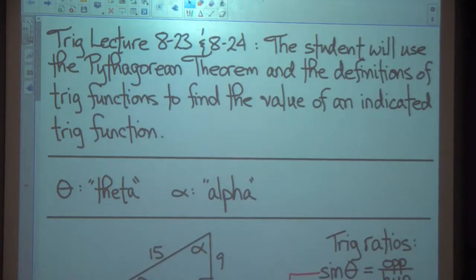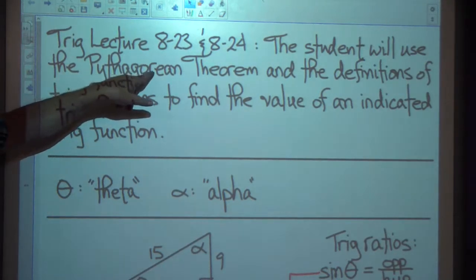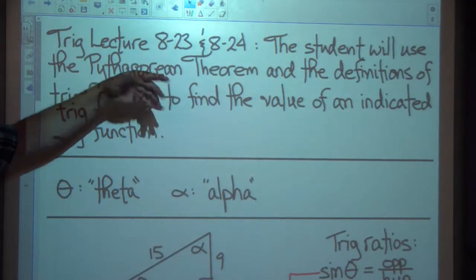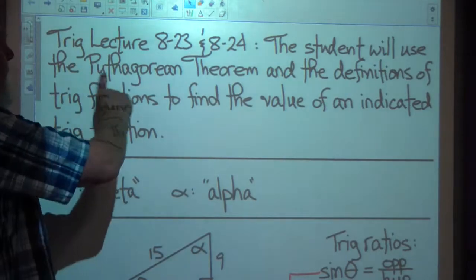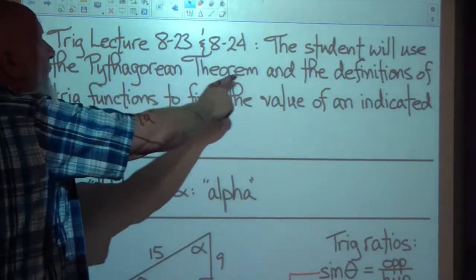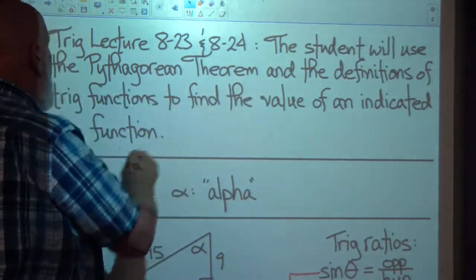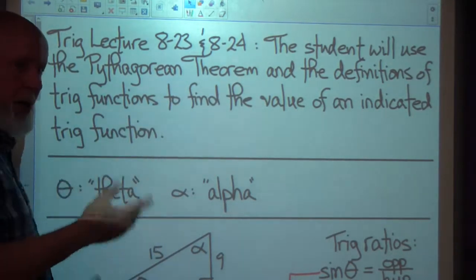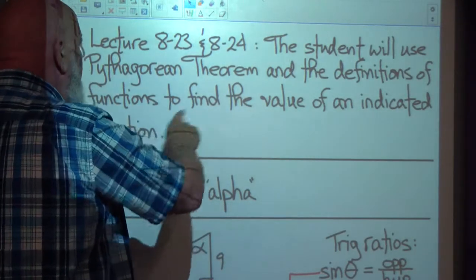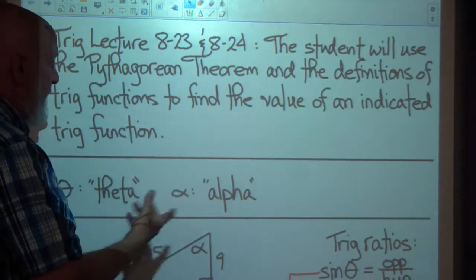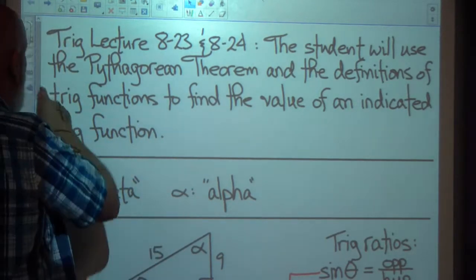This is trig lecture 823 and 824. The student will use the Pythagorean theorem — a squared plus b squared equals c squared — and the definitions of trig functions, which we learned back in geometry, to find the value of an indicated trig function.